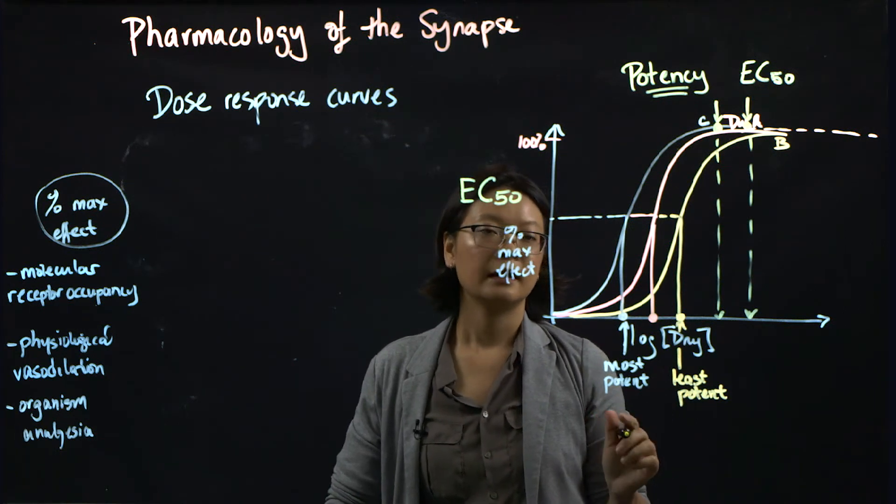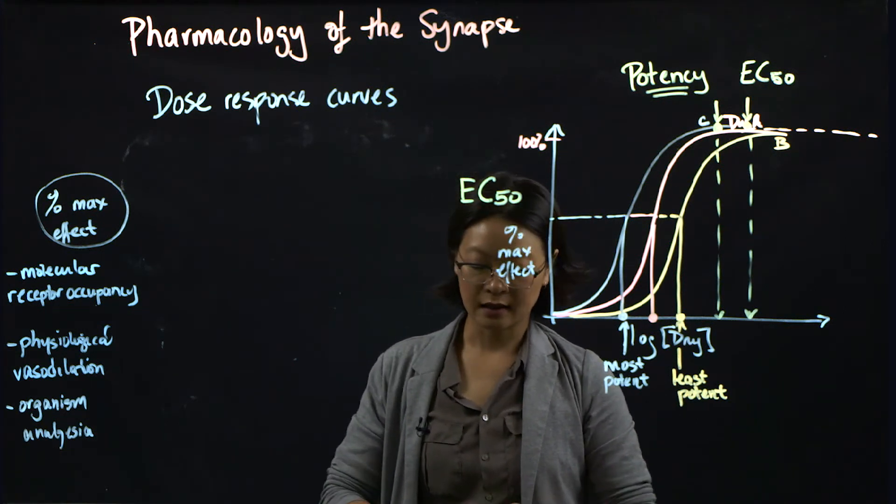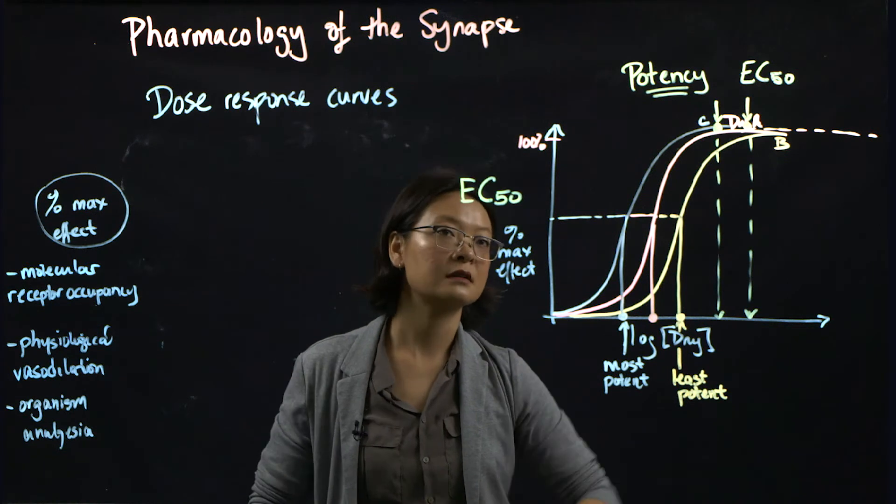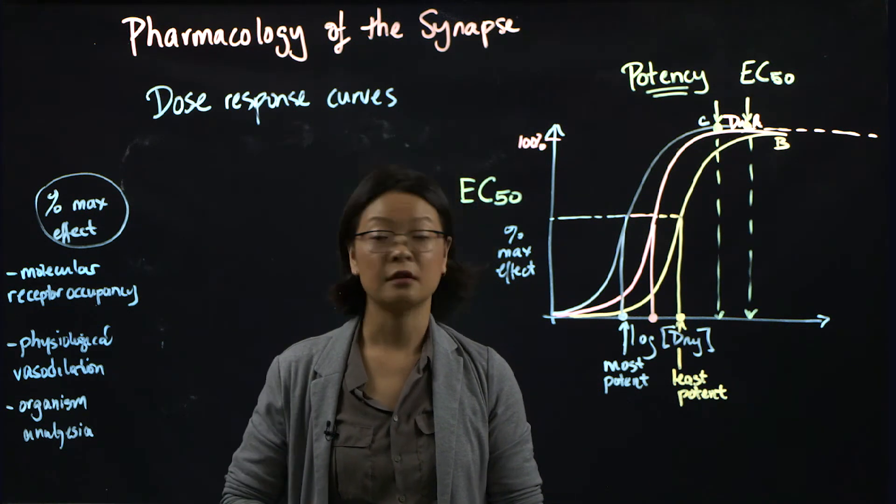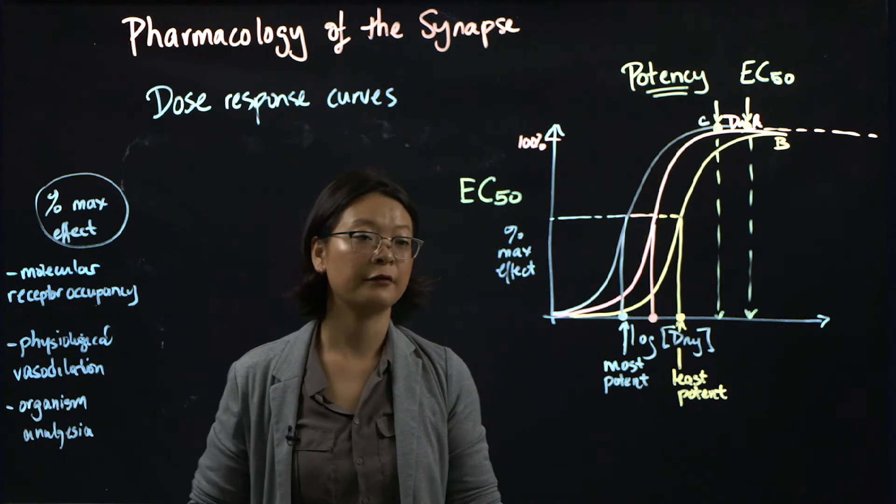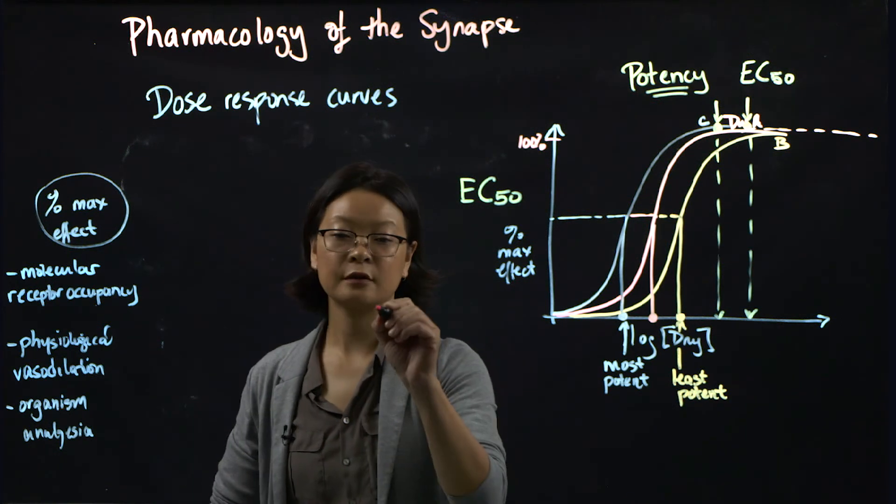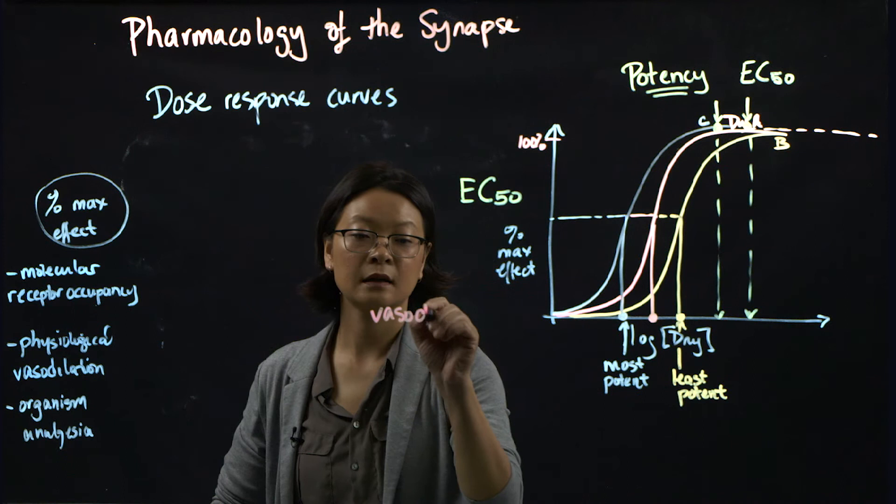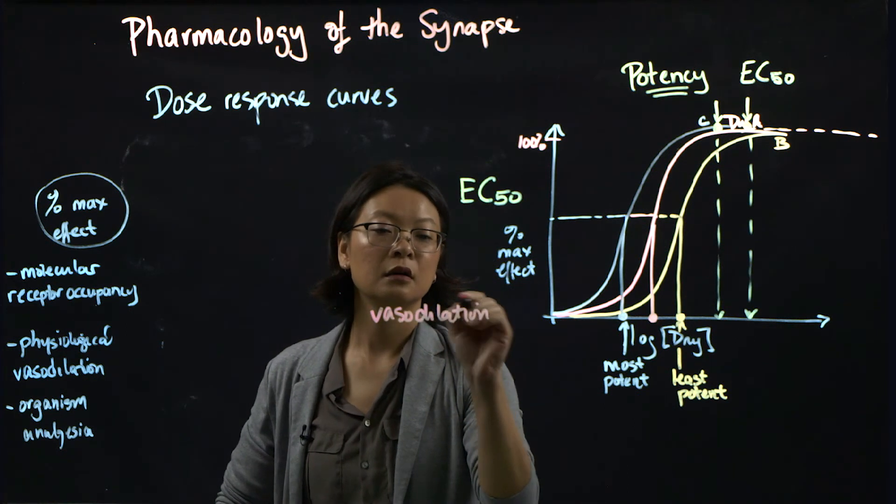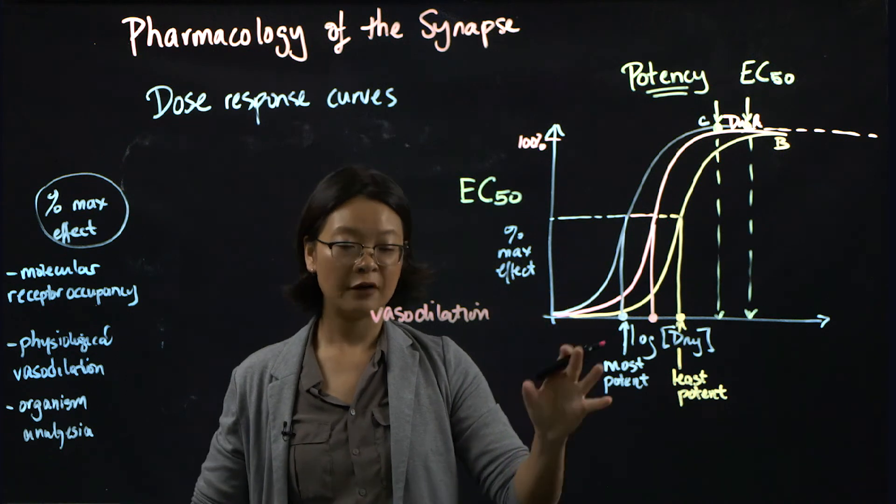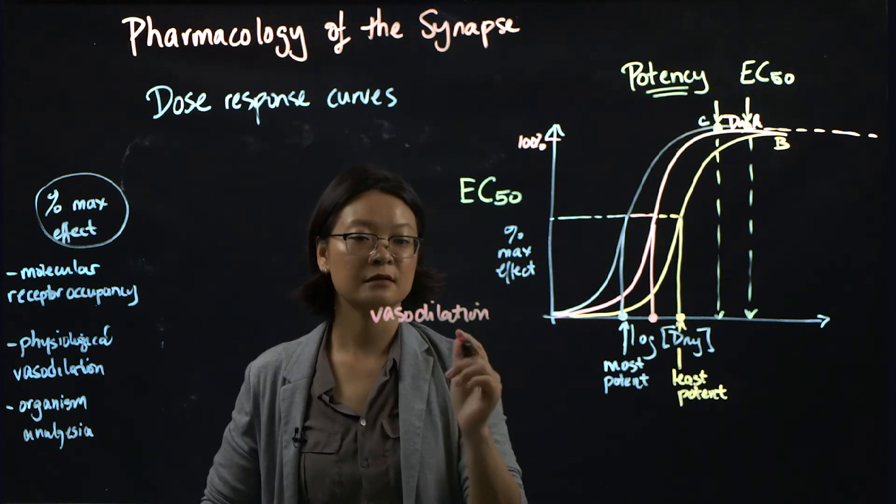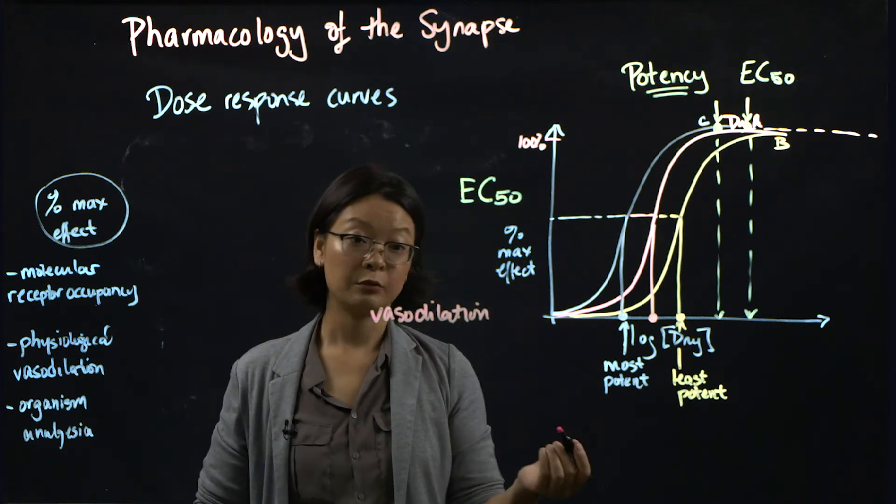Second of all, in medicine and in therapeutic benefits, you often don't need an EC100 to produce therapeutically beneficial effect. So for example, if we're talking vasodilation, we don't really need a drug to cause 100 percent efficacy to dilate all your blood vessels if you're trying to treat high blood pressure.